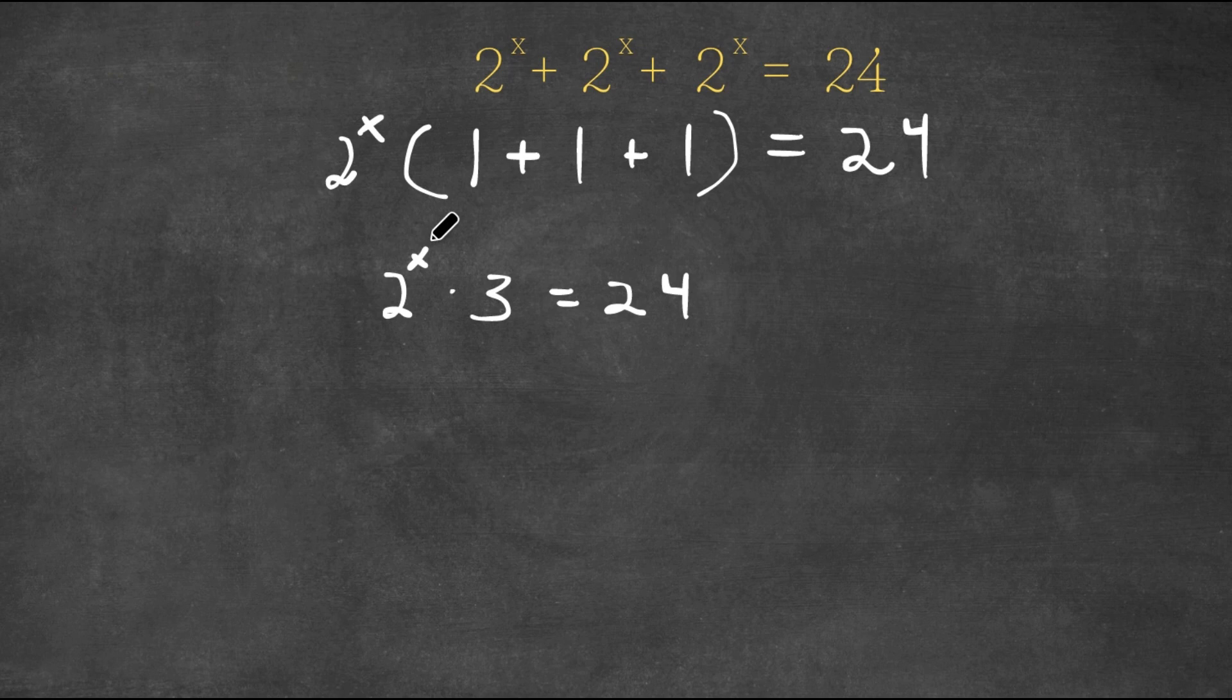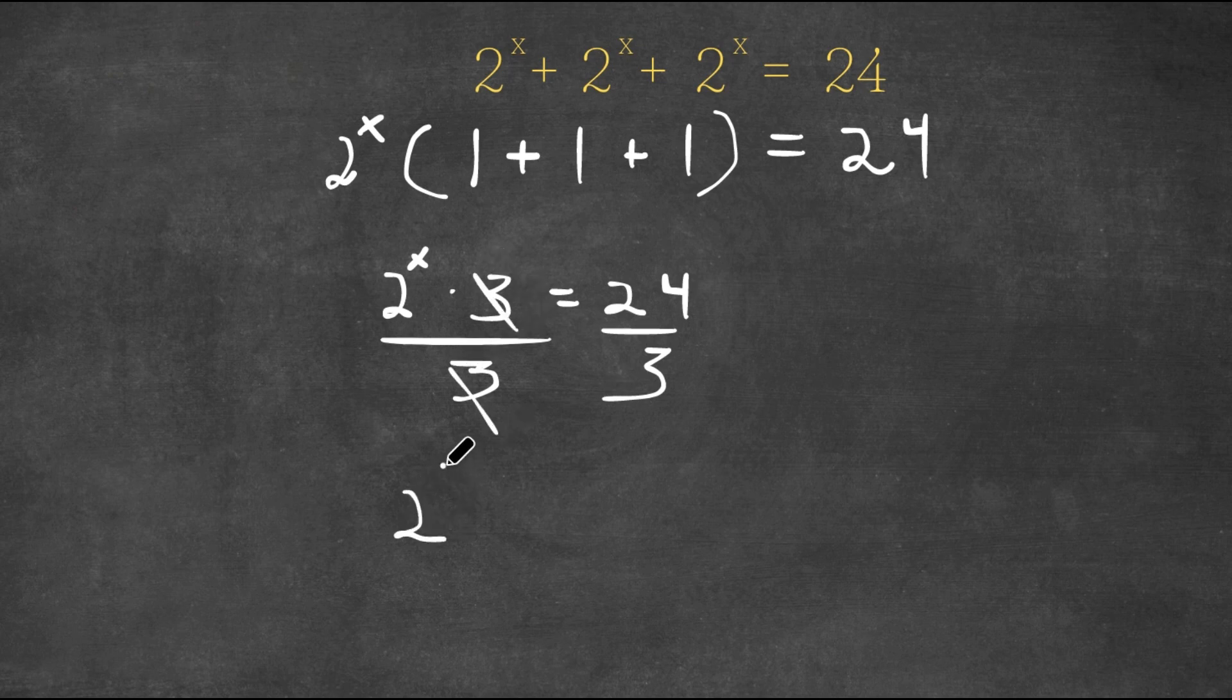Now I want to isolate 2 to the power of x, so I'm going to move our 3 to the left-hand side, so I'm going to divide both sides by 3. These two cancel out, and I'm left with 2 to the power of x is equal to 24 divided by 3 is 8.